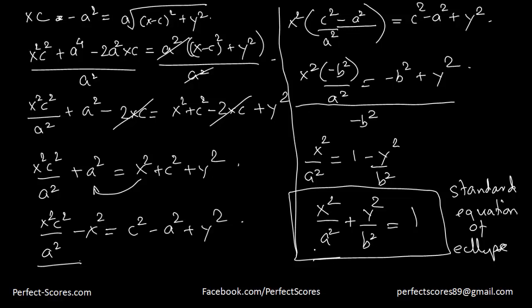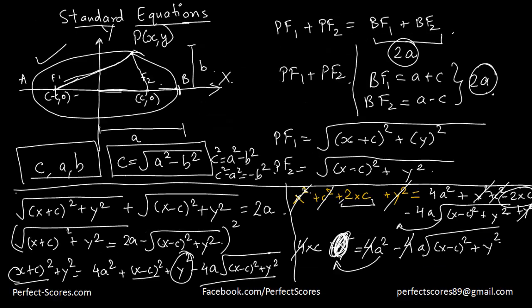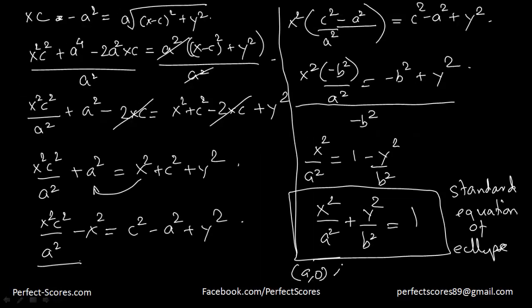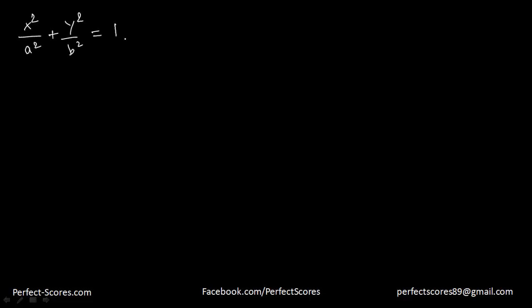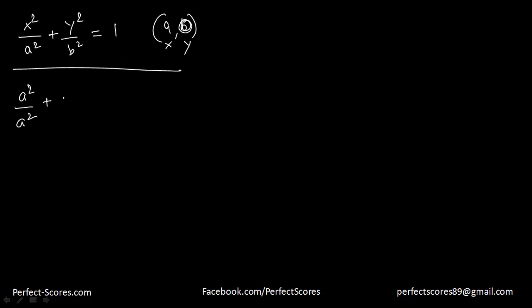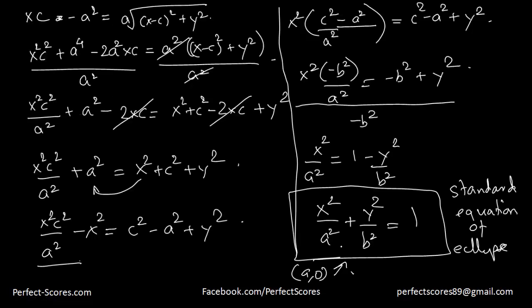Just to put that to test, we can pick a point on the ellipse. We know this point lies on the ellipse and this length is A, which means this point is (A, 0). So (A, 0) should satisfy this equation. Substituting: A²/A² + 0²/B² = 1 + 0 = 1. Yes, it checks out. So every point on the ellipse satisfies x²/A² + y²/B² = 1.